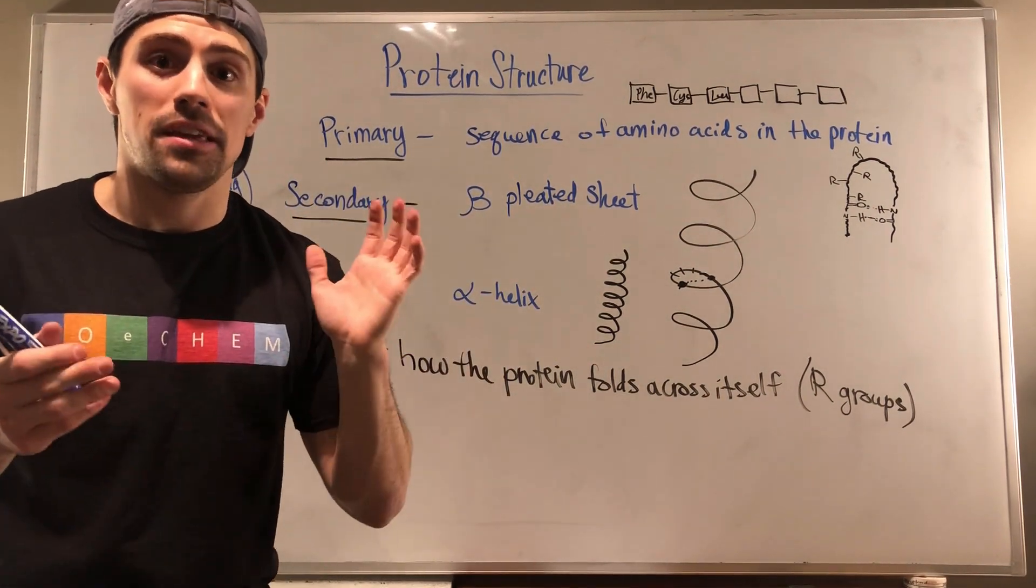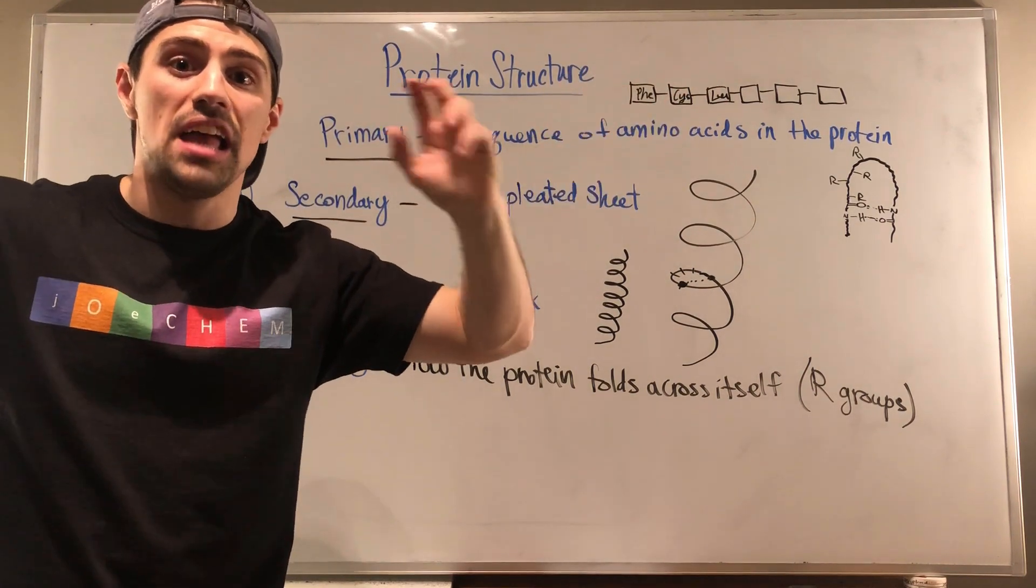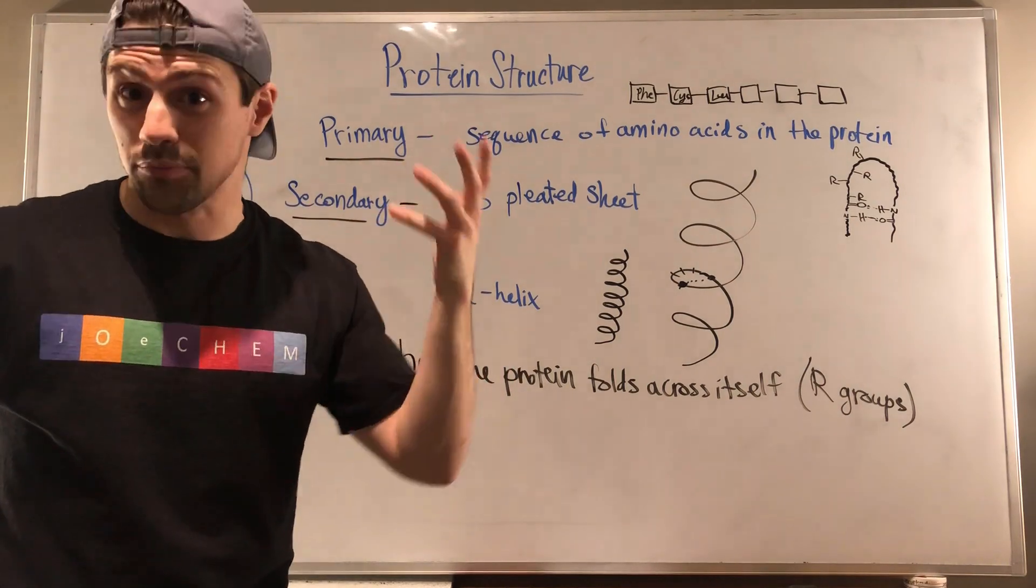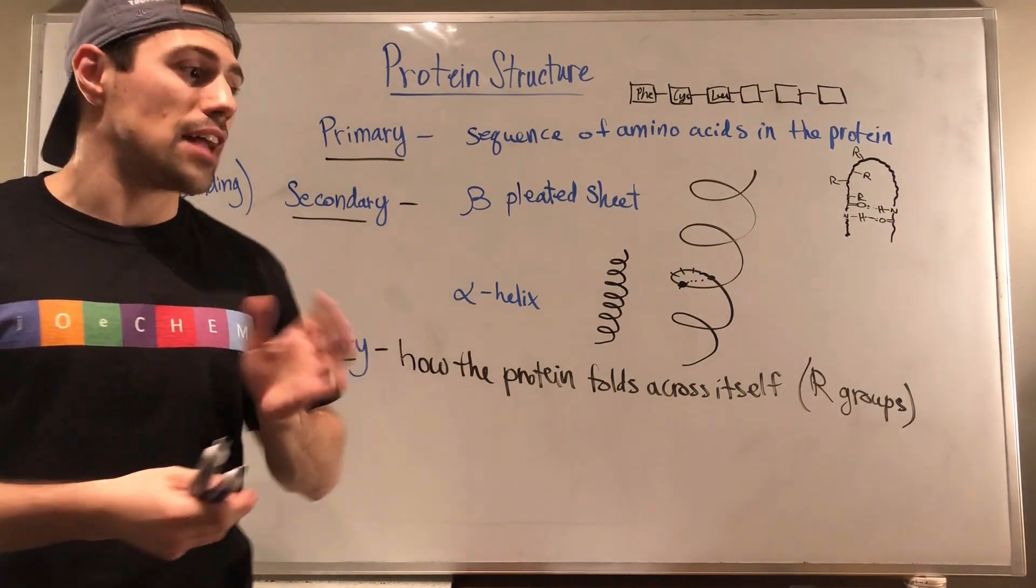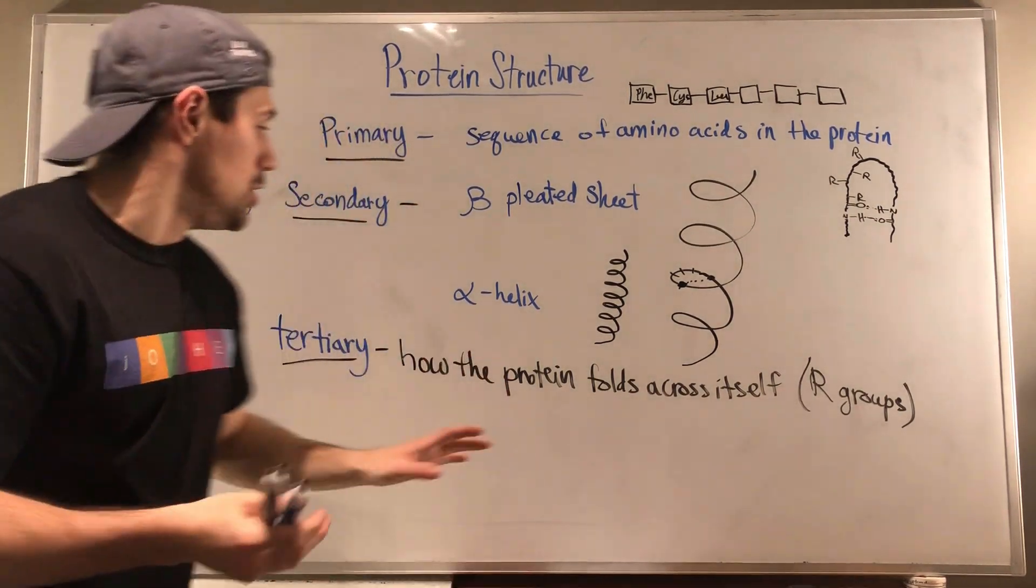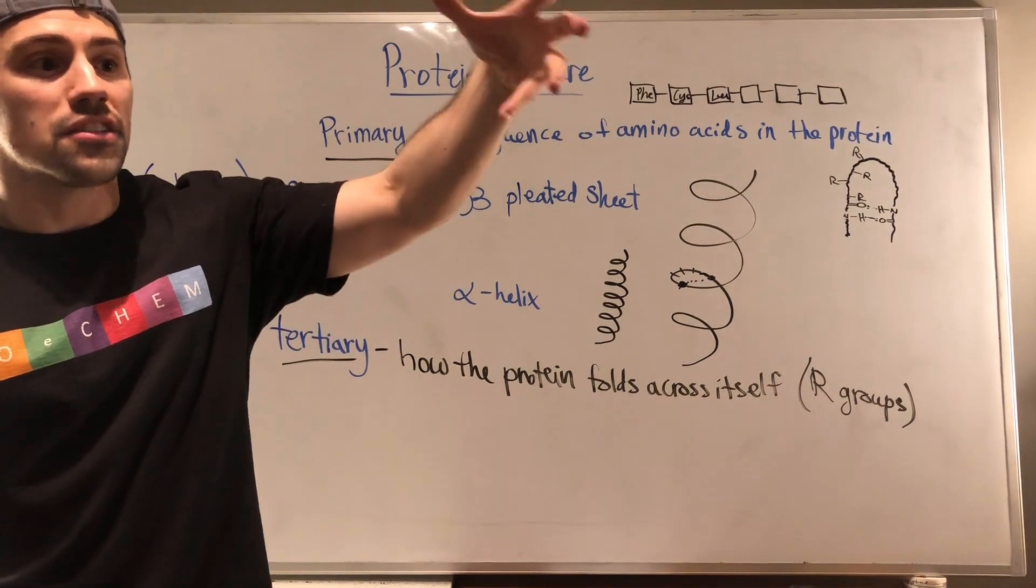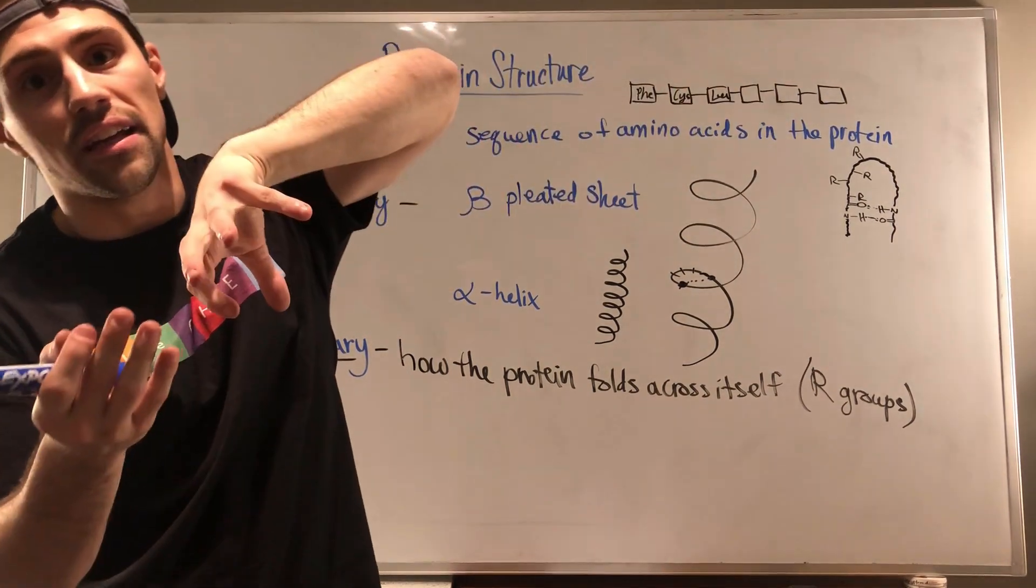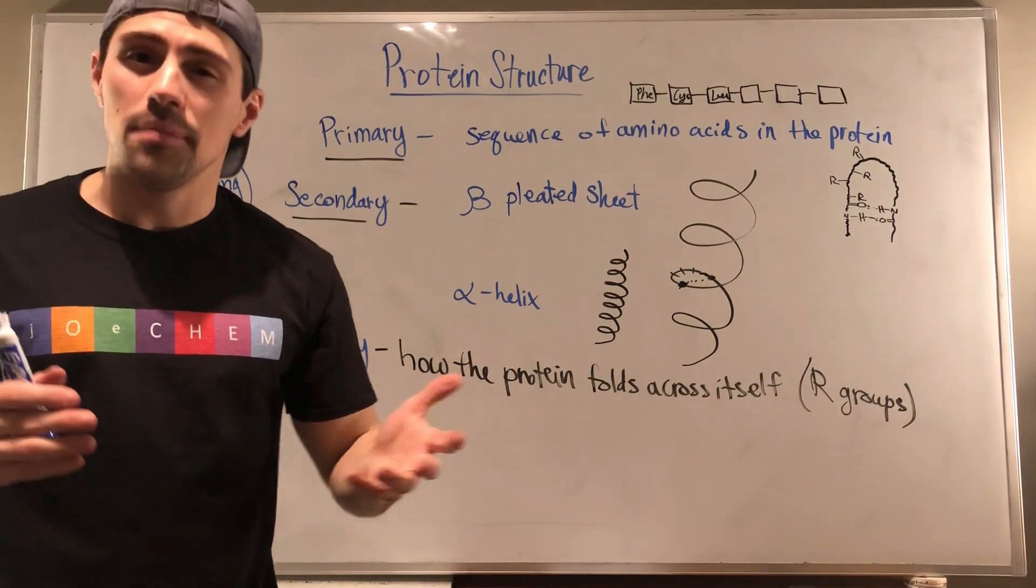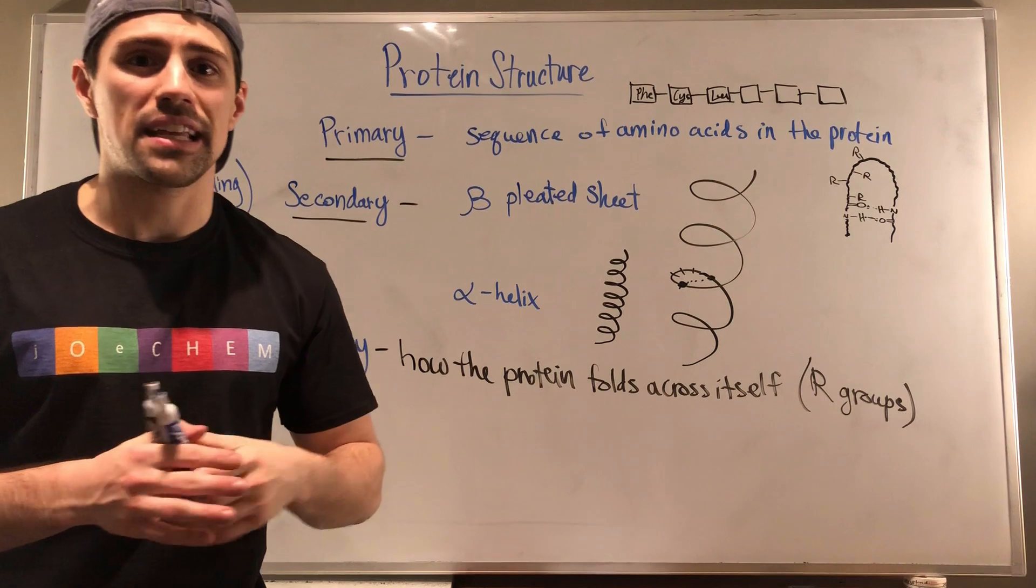So maybe you have a few different R groups that are starting to kind of tangle with each other. And maybe you have two different cysteines, maybe you have sulfur in two different places and those come together and they can actually bond with each other and form what's called a disulfide bridge. So that's why when you get very large and spaghetti monster-like, you can have tertiary structure and it's how different areas of a protein find other areas and interact with it and fold and do stuff like that.